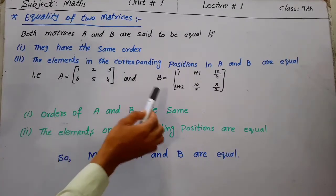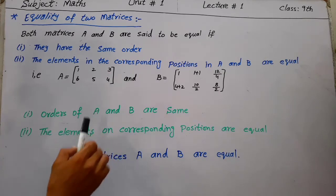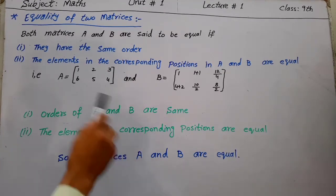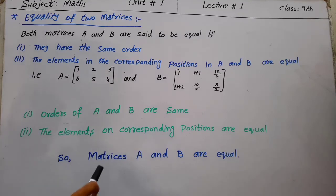Since the matrices have the same order and corresponding elements are equal, matrices A and B are equal.